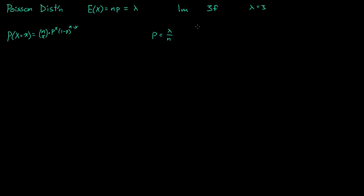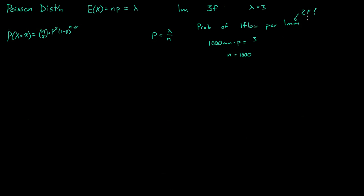So if we want to find the probability of one flaw per millimeter of wire, well to make lambda equal three we need a thousand millimeters, because a thousand millimeters times p will give us three flaws per meter. So n is equal to a thousand. But the problem with that is we could have two flaws in one millimeter of wire, which is completely possible. So we want to go to an even smaller number where the probability of there being more than one flaw per section is extremely small.